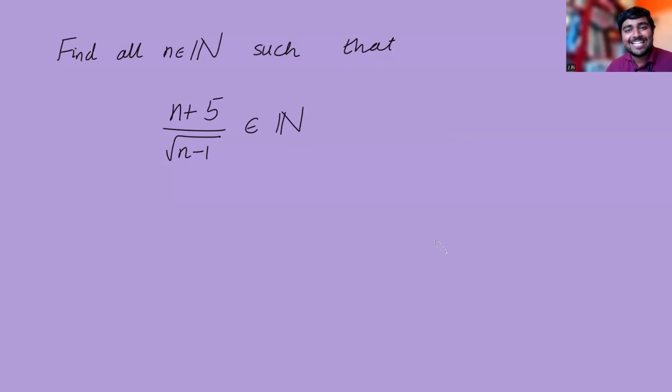We want to find all positive integers n such that n plus 5 divided by the square root of n minus 1 is also a positive integer. Pause the video now and give this problem a go for yourself, but I'm going to dive right in here.